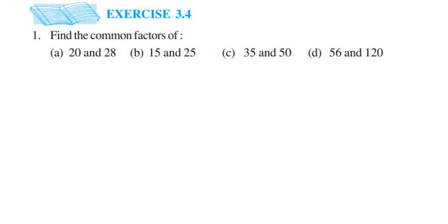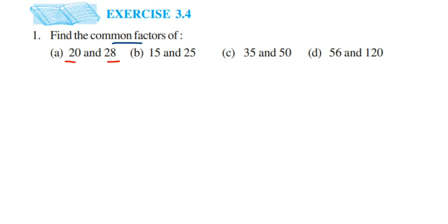Hey everyone, here I am doing Exercise 3.4, Playing with Numbers for Classics. The question is to find the common factors. We have four questions; the first one is 20 and 28. Before we find the common factor, we have to find out the factors of the given numbers, and then later we're going to find out the common factor.